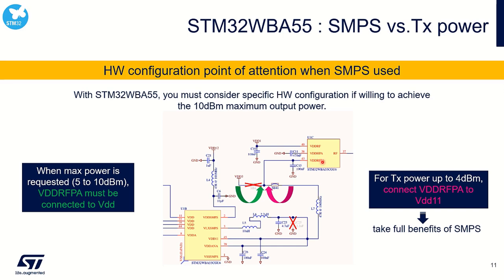Please keep in mind: if you want to get the maximum output power up to 10 dBm, you must connect the VDD RFPA pin directly to VDD. If you can sustain a TX power of up to 4 dBm, then you can take benefit of the SMPS to supply this VDD RFPA pin directly. Pay attention to this specificity and properly connect the VDD RFPA pin depending on your targeted output power.